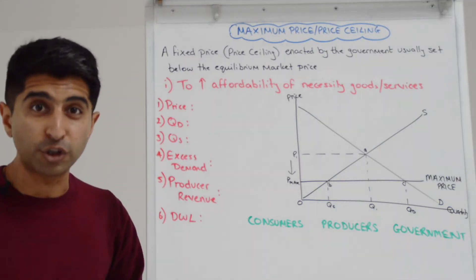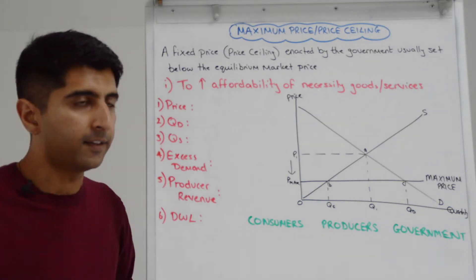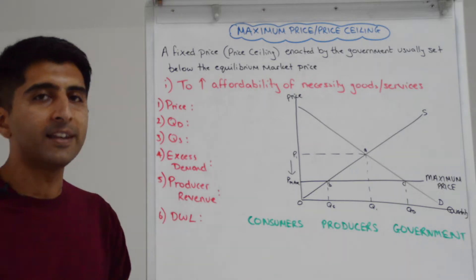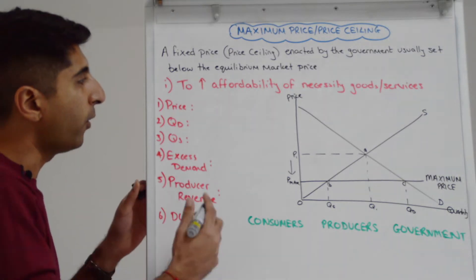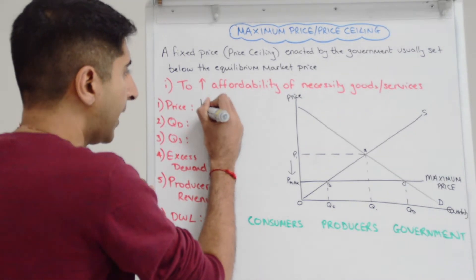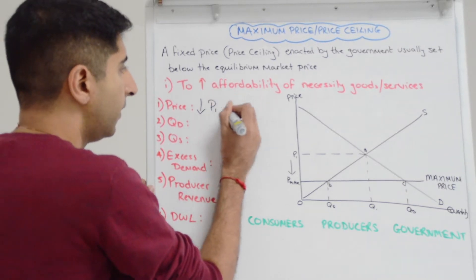Let's see what the distortions are in the market as a result of this intervention. Well immediately we can see that prices are lower, that's the whole point of the policy. So prices come down from P1 to Pmax.